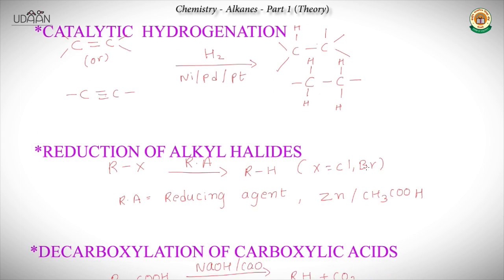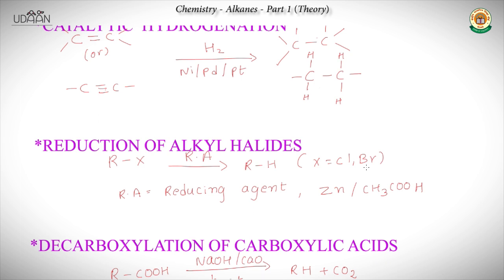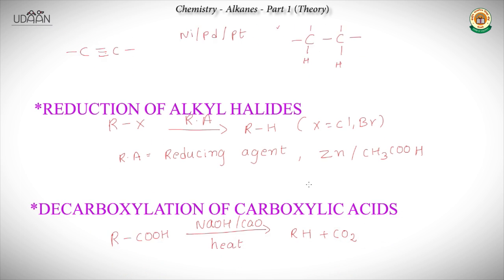The next preparation method is reduction of alkyl halides. In this, we start with an alkyl halide and treat it with a reducing agent like zinc in acetic acid or copper, and we get an alkane. We'll cover the mechanism later.